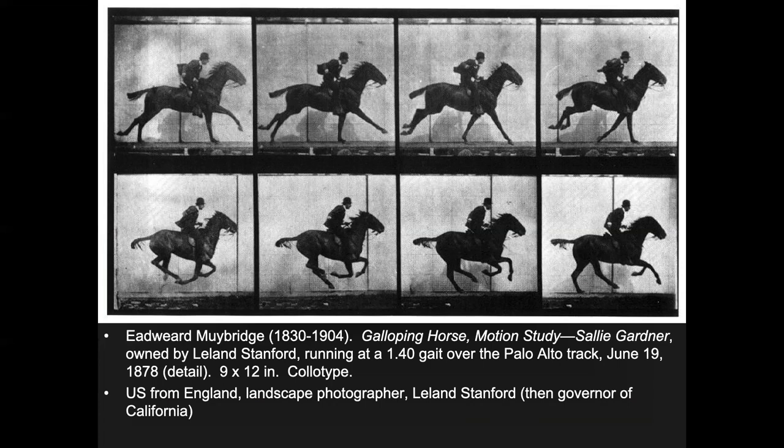With these fast exposures, Muybridge realized you could stop motion of things we can't normally see. There was a debate about horses galloping: do all four hooves come off the ground at the same time? And if so, are the legs spread out or bent underneath? You can see the answer in these frames — the horse has all four hooves off the ground when its legs are bent underneath it.